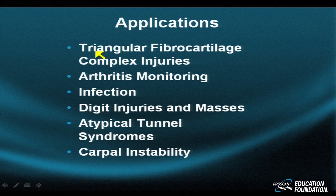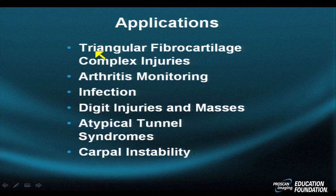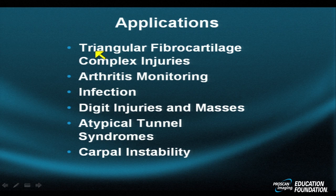Arthritis monitoring may seem simple and addressable with conventional radiographs, but many organizations now require evaluation of soft tissue, particularly pannus formation in rheumatoid arthritis, to decide whether expensive drugs like Remicade should be used and are working efficaciously. For infection, while sometimes an obvious clinical diagnosis, a swollen wrist or sausage digit may present occultly, especially if the infection is atypical and not of pyogenic etiology.